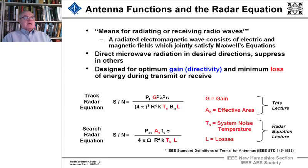And we want to have what is known as the gain or directivity—I'll go into the differences of those in a moment. We want to design it for optimum gain or directivity and minimum losses of energy. Now, as we showed earlier in the radar equation lectures, there's two forms of the radar equation: the track radar equation and the search radar equation. And here's the track radar equation.